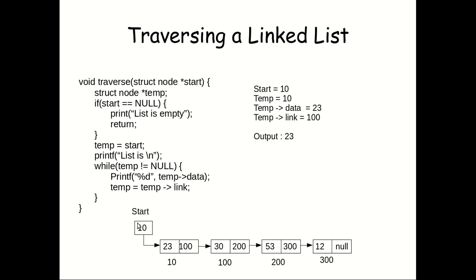So let's see the dry run. Initially the value of start is 10 — this is the starting point of the linked list. We assign the start value to temp, so temp also holds value 10. Then temp->data will be 23 and temp->link will be 100, as temp now points to the first node which has value 23.